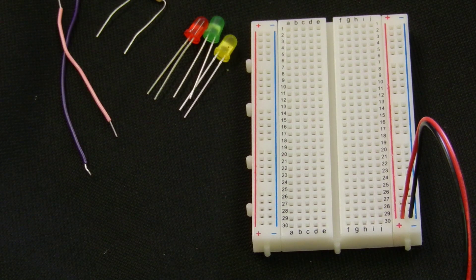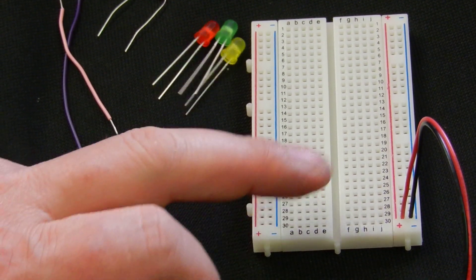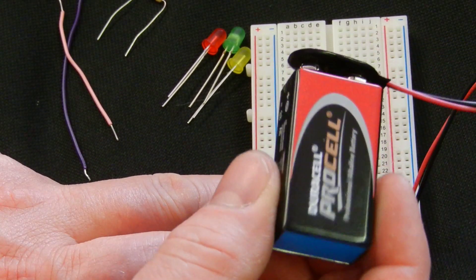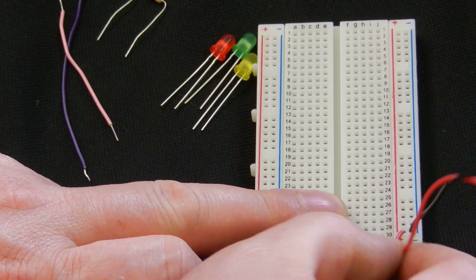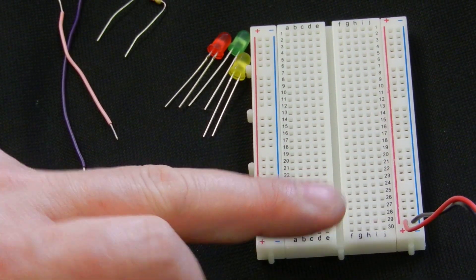This is a short tutorial on how to use the solderless breadboard. What we have is a 9 volt battery and the red is connected into the positive rail, the black is connected into the negative rail.